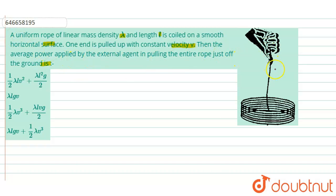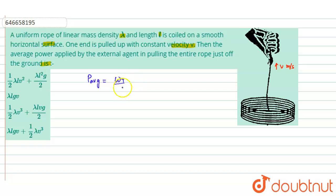This rope is being pulled with constant velocity v meters per second upward. To calculate the average power, the formula is: average power equals total work done in pulling the rope just above the surface divided by the time taken to pull the rope.